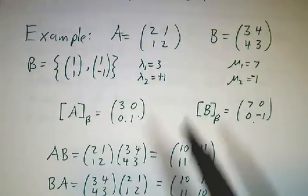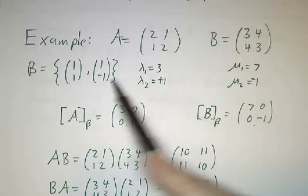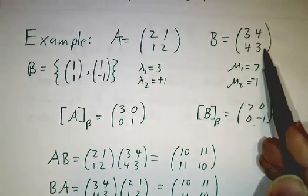We found the eigenvalues of A, 3 and 1. The eigenvectors are (1,1) and (1,-1) and boom, they're also eigenvectors of B.